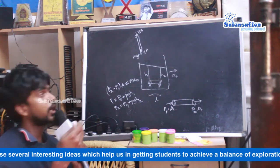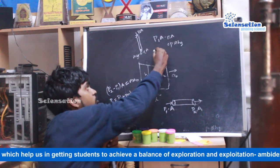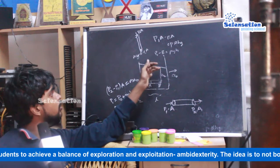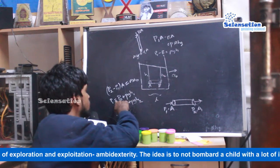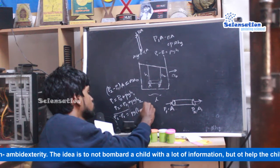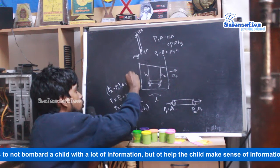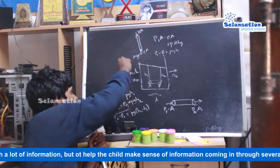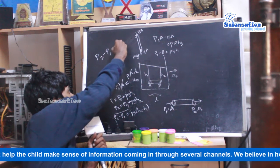So p1·A minus p0·A equals ρ·A·h·g. Cancelling A on both sides gives p1 minus p0 equals ρgh. Therefore p1 equals p0 plus ρgh1 and p2 equals p0 plus ρgh2. Plugging into equation one: p2 minus p1 equals ρg(h2 minus h1). The mass of the cylinder strip is ρ·A·l, so substituting and cancelling area A gives p2 minus p1 equals ρ·l·a₀.